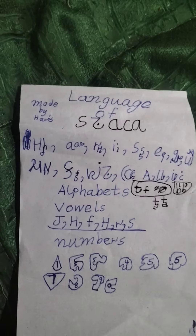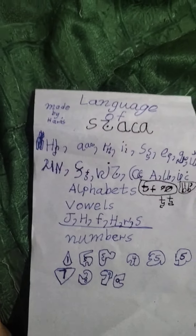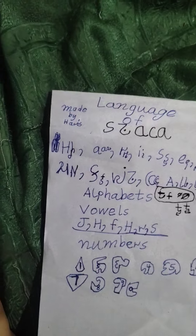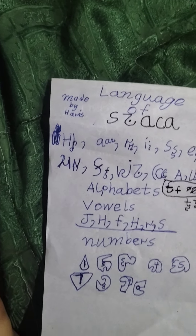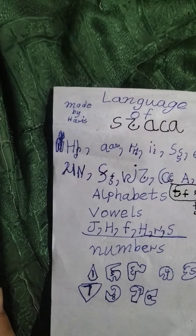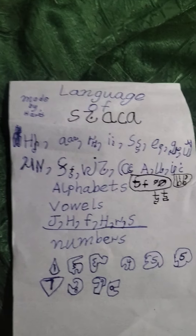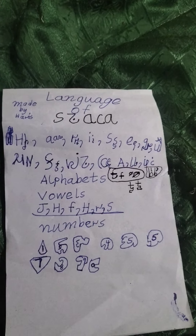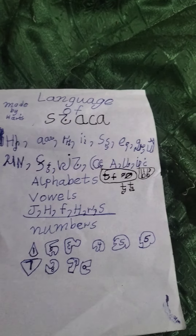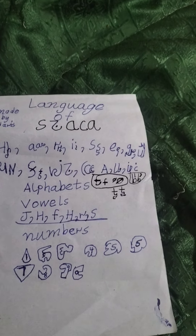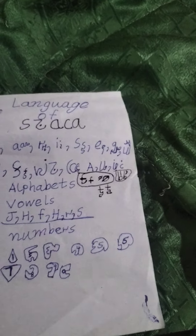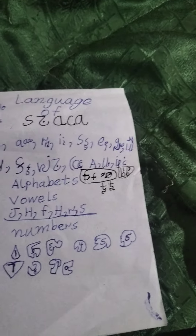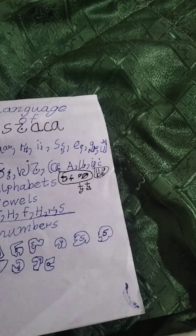My language is Sajakah, made by Horace Nawab. My first alphabet is H, second alphabet is A, third alphabet is R, fourth is I, and fifth is S.